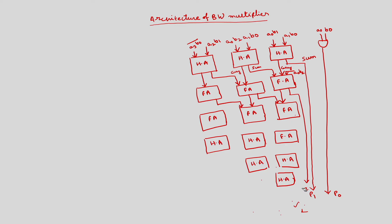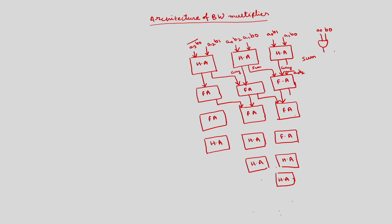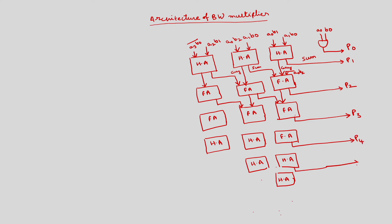So this is P0, this is P1, this is P2, and here we generate P3, here we generate P4, P5, and here we generate both bits P6 and P7 — a total 8-bit result. This is the 8-bit result.